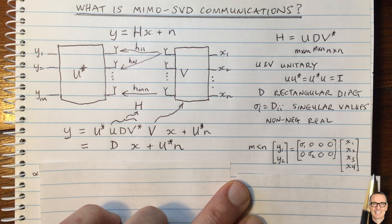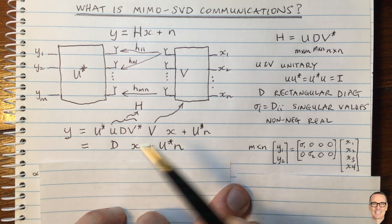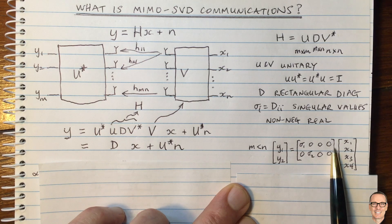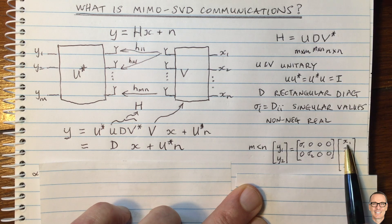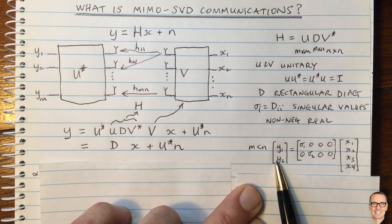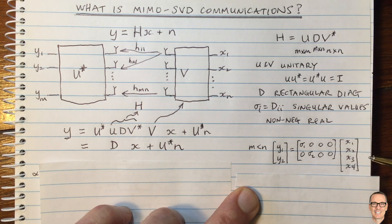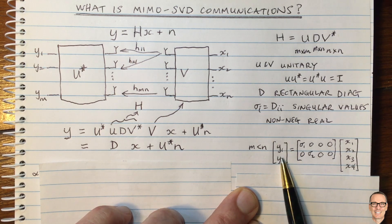If M equals 2 and N equals 4, the diagonal matrix is a 2×4 rectangular diagonal with only two singular values on the diagonal and the rest filled with zeros. The first output Y1 is given by the first singular value times X1, with zeros multiplying the others. The second output is the second singular value times X2. So any data we put onto channels 3 and 4 will not be received at the receiver — that's important when deciding how many data streams to use.